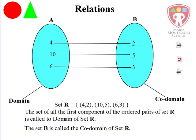Relations. Here we have two sets, a set A and a set B, and they are related. The relation is shown by the arrow diagram. We have a set R, which contains the ordered pairs of this relation.